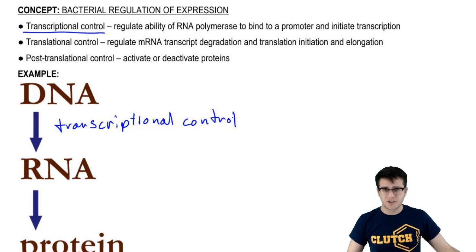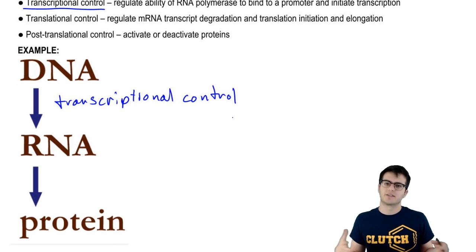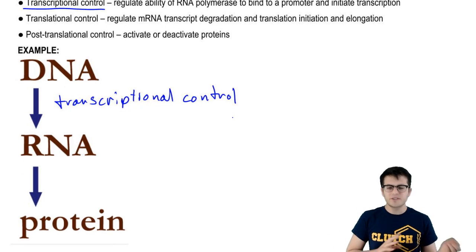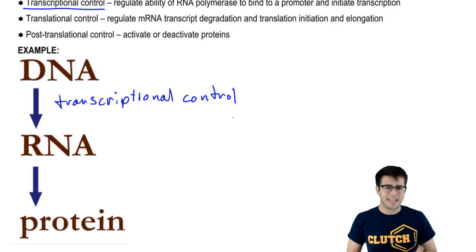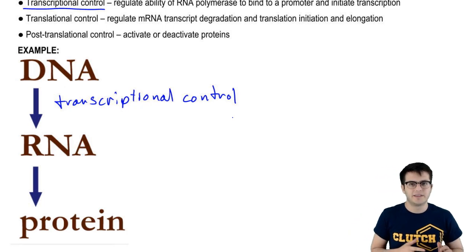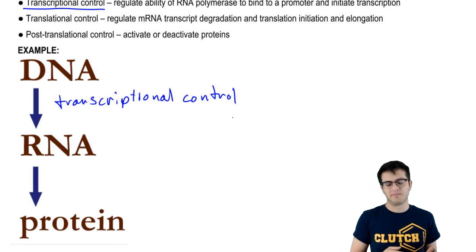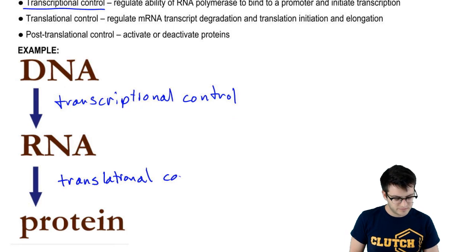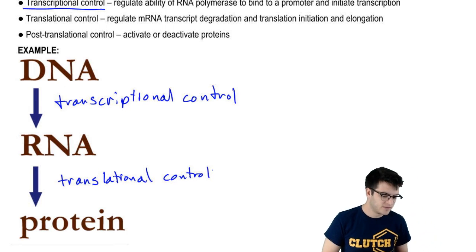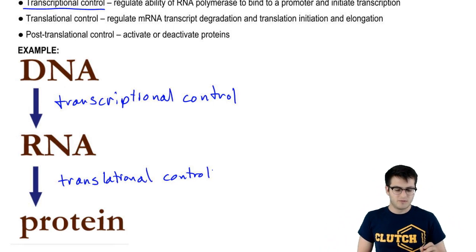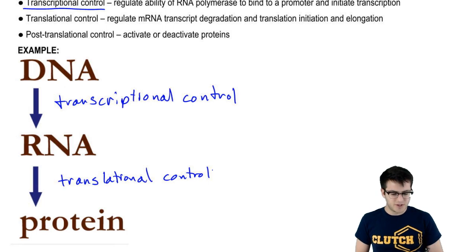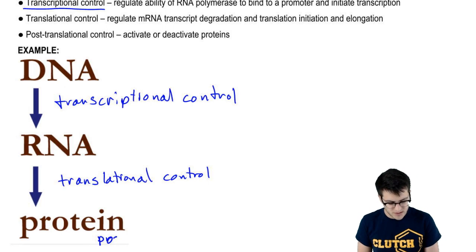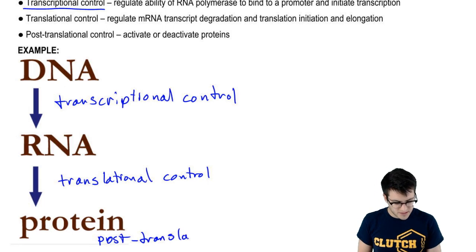You can also have translational control, which regulates the process of translation. This usually occurs in two forms: either some sort of degradation of the mRNA transcript, or regulation of the initiation and elongation steps in translation. Additionally, you can regulate proteins after they've been translated, usually in the form of activating or deactivating proteins — this is post-translational control.